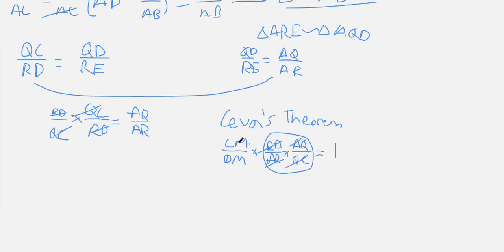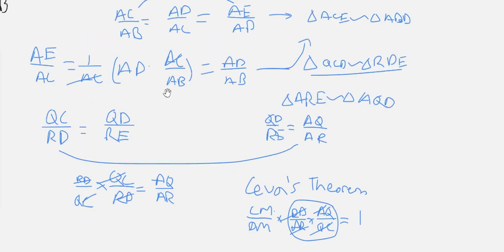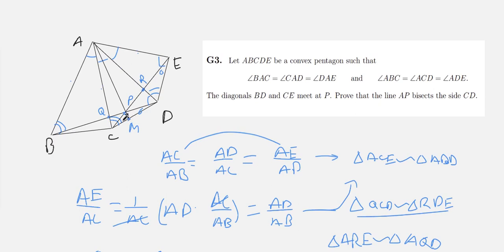So, in all we have that CM divided by DM equals 1. That's exactly what we want, because that means that M is the midpoint of CD.